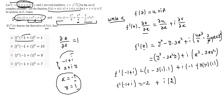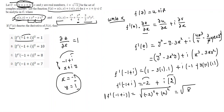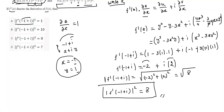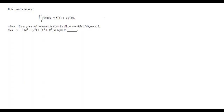They are asking the modulus squared of f'(−1 + i). To find the modulus, we use √(x² + y²). Here the real part is −2 and the imaginary part is 2, so modulus = √(4 + 4) = √8. Since they ask for the whole square, |f'(−1 + i)|² = 8. So the correct answer is option C.